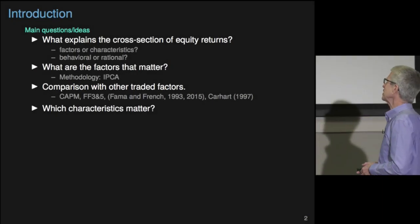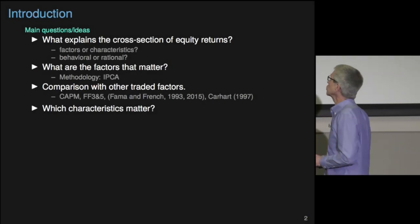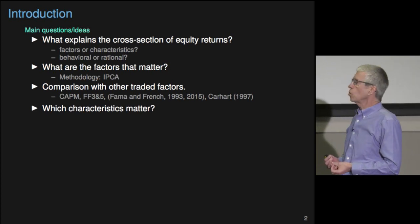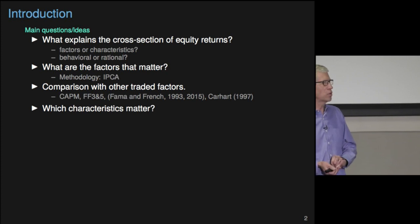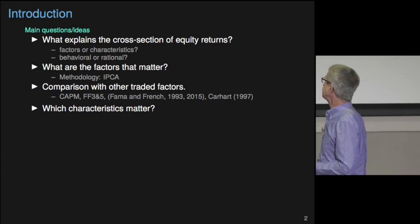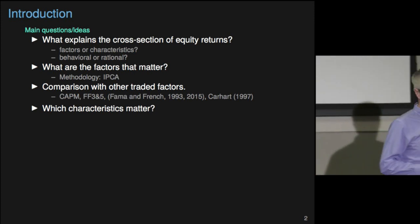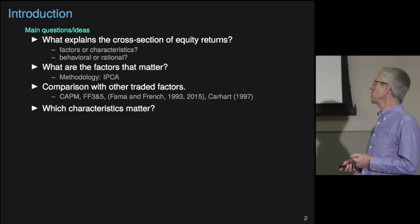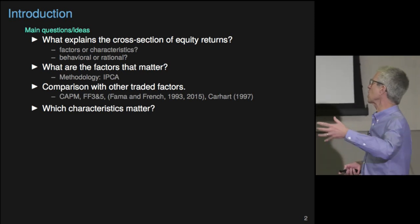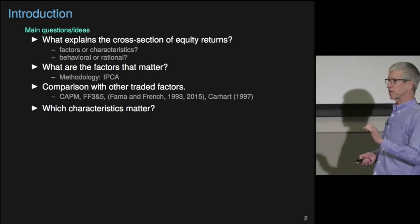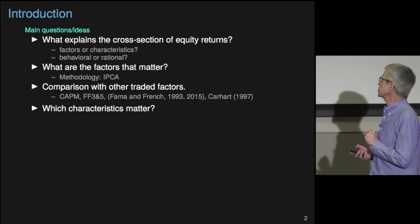The key idea here is the question that we've been obsessed with for decades in this field: what explains the cross section of equity returns? This paper is introducing a really cool new technique — instrumented principal components analysis — and it does solve a lot of the problems associated with some of the tests that have been run. I want to see to what extent the authors' claims are merited. They're very, very strong, and I think some of that is merited, but not all of it. That's going to be the gist of my discussion.